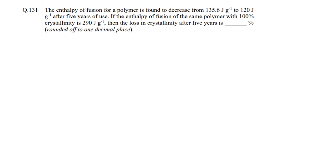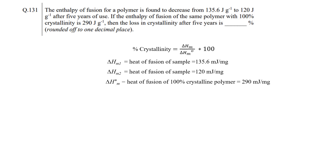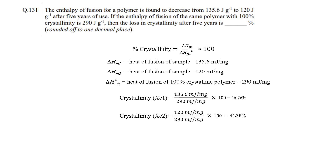In Question 131, we need to find the loss in crystallinity of a polymeric material over 5 years. The enthalpy of the initial and 5-year-old samples is given, as well as the enthalpy of the 100% crystalline sample, which is important to calculate percent crystallinity. Using this formula, the percent crystallinity of the new sample is 46.76% and of the 5-year-old sample is 41.38%. The difference is 5.38%, which is the loss in percent crystallinity over 5 years.